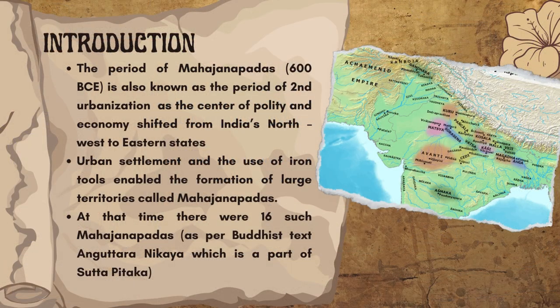Let us have a brief look about what Mahajanapadas are all about. The period of Mahajanapadas, 600 BCE, is also known as the period of second urbanization as the center of polity and economy shifted from India's northwest to eastern states. Urban settlement and the use of iron tools enabled the formation of large territories called Mahajanapadas. At that time there were 16 such Mahajanapadas.